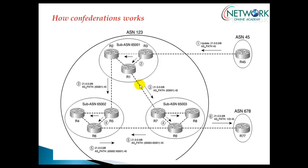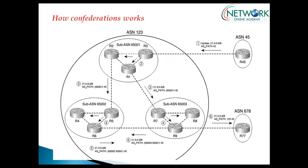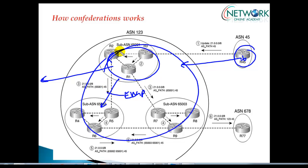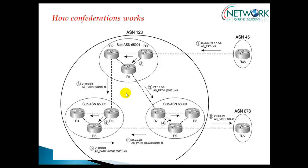Each sub-AS in the confederation needs to have internal BGP peering — either full mesh or route reflector. For outside users they appear as just one AS, but internally they are like different autonomous system numbers. We need a full mesh neighborship inside each sub-AS, and between sub-AS we need a normal BGP peering just like we do in normal BGP.